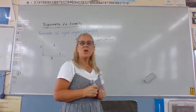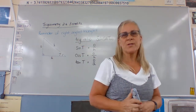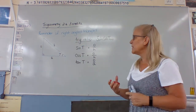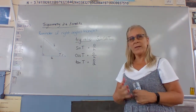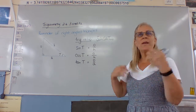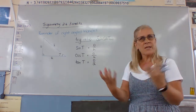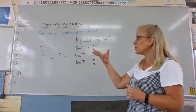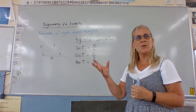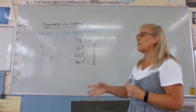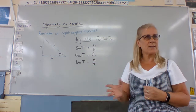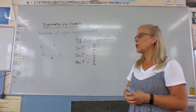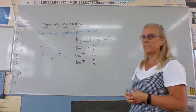With those three rules and some information — two pieces — we can find everything else on that triangle. We can find the two missing angles, or we can find any missing sides. We just need two pieces of information.